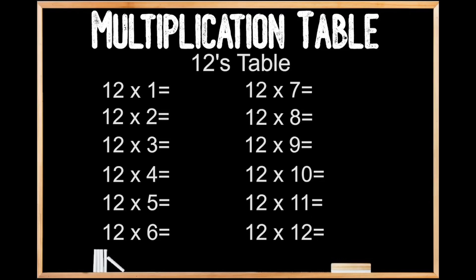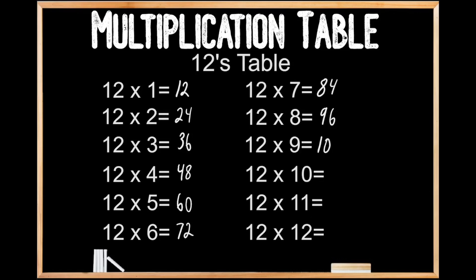12 x 1 is 12. 12 x 2 is 24. 12 x 3 is 36. 12 x 4 is 48. 12 x 5 is 60. 12 x 6 is 72. 12 times 7 is 84. 12 times 8 is 96. 12 times 9 is 108. 12 times 10 is 120. 12 times 11 is 132. And 12 times 12 is 144.